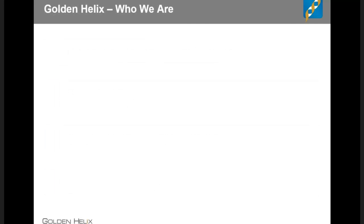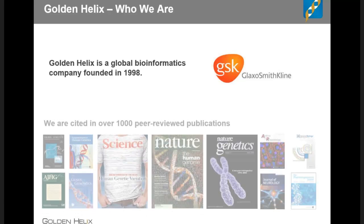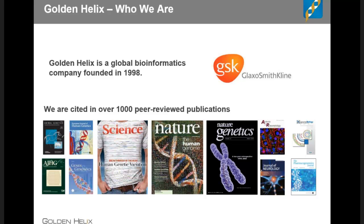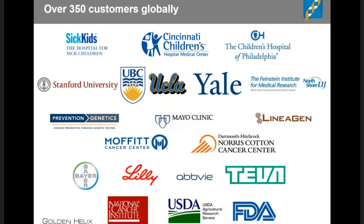Golden Helix was founded in 1998. Our founder spun off early work from GlaxoSmithKline, and GSK is still a key investor. Golden Helix started out creating products for genomics and bioinformatics with our HelixTree software, which has since become our SNP and Variation Suite. We have since added two products: Genome Browse and VarSeq, which we're talking about today. With these products, the company has over 17 years of experience in bioinformatics and has been cited in over a thousand peer-reviewed publications, including Nature, Nature Genetics, and others.